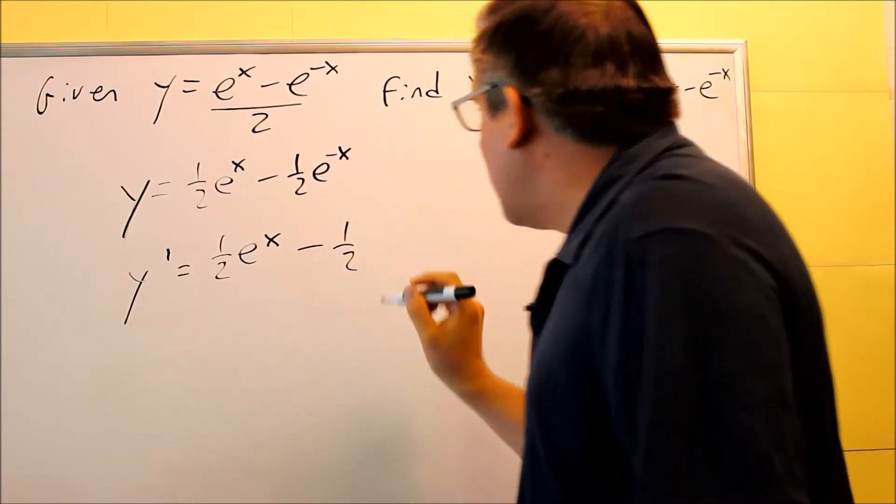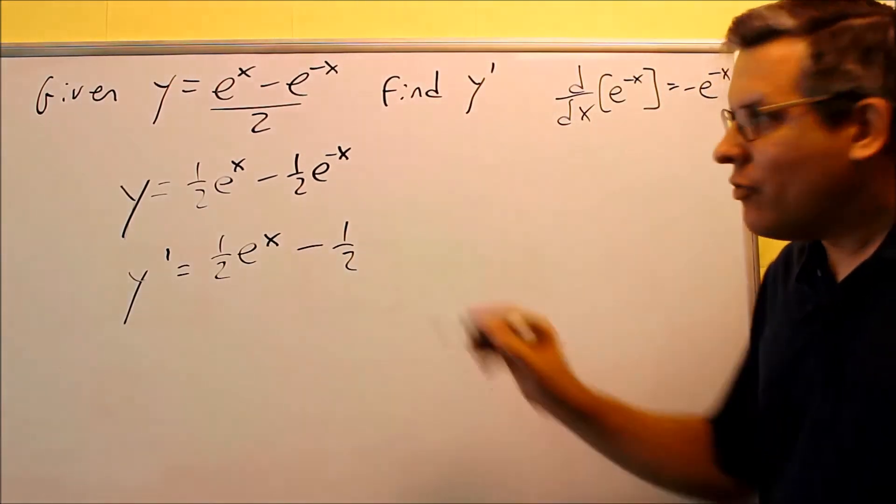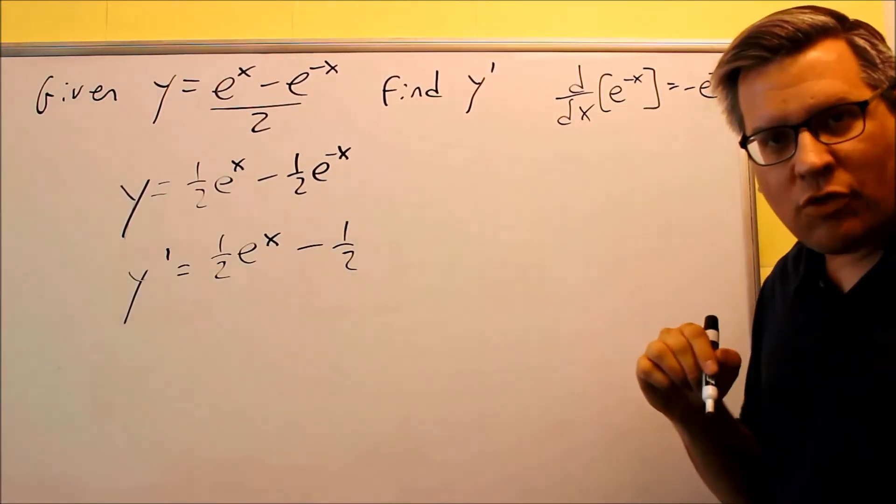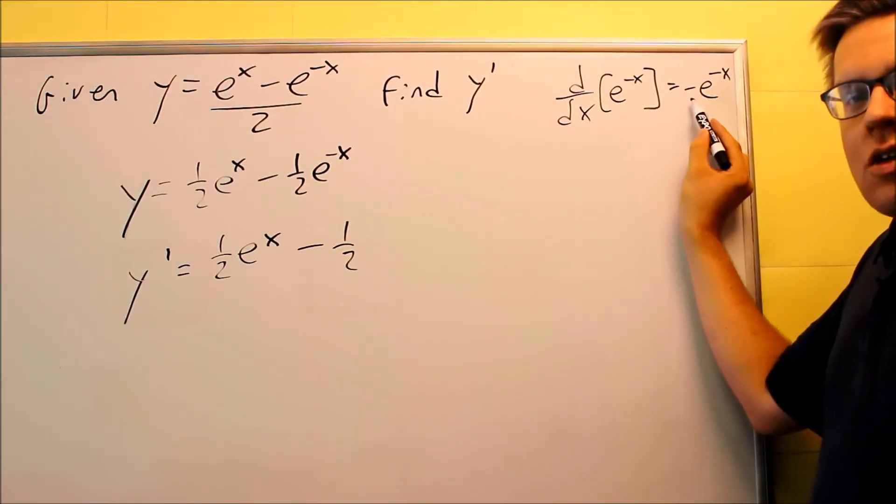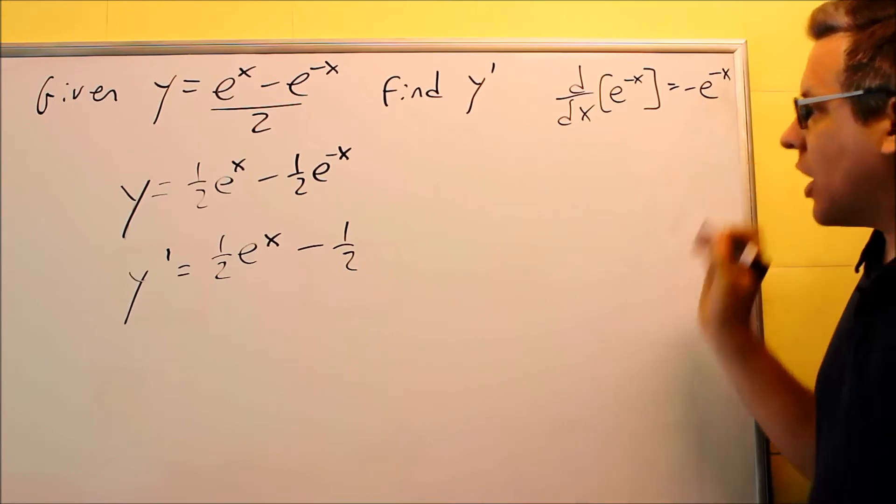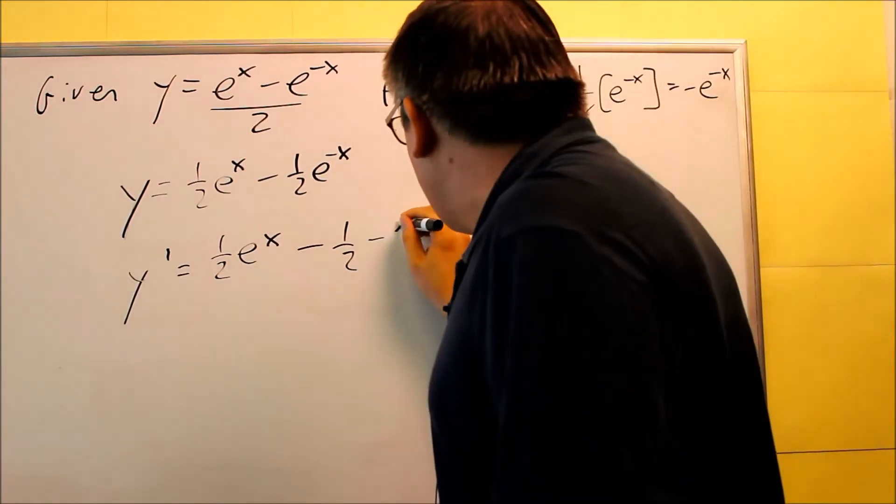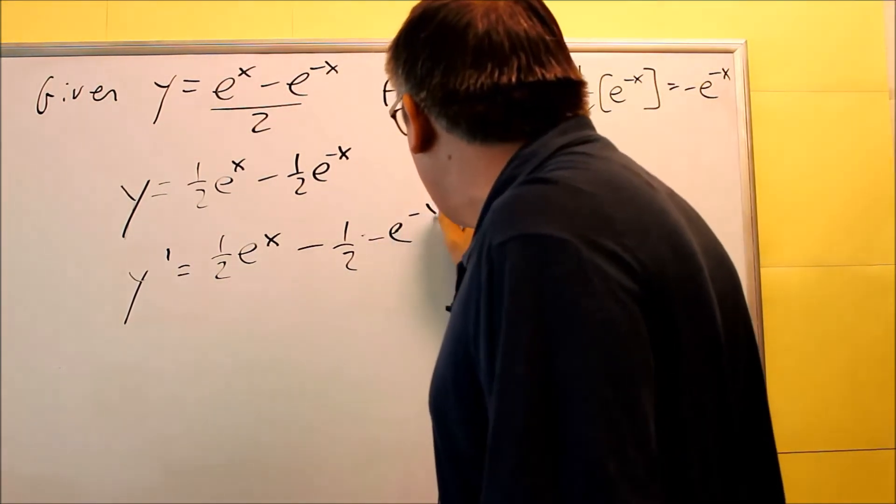Over here, I have a minus one-half, and then I'm going to multiply it by the derivative of e to the negative x, which we already did before in that previous example. So with that, we're going to put in this, negative e to the negative x. Negative e to the negative x.